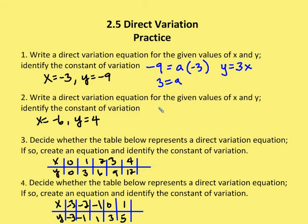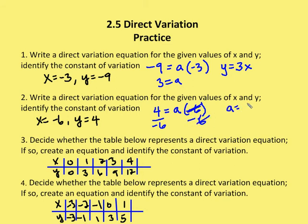Next: write a direct variation equation for the given values of x and y, identify the constant of variation. Here y is 4, so 4 equals a times negative 6. Dividing both sides by negative 6, we get a equals negative 2 thirds. Rewriting the equation: y equals negative 2 thirds times x.